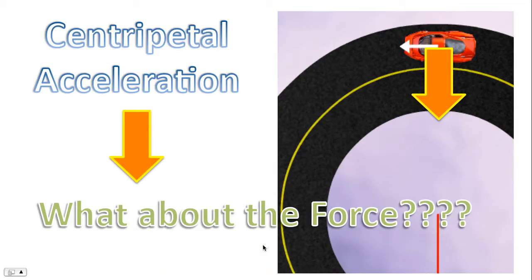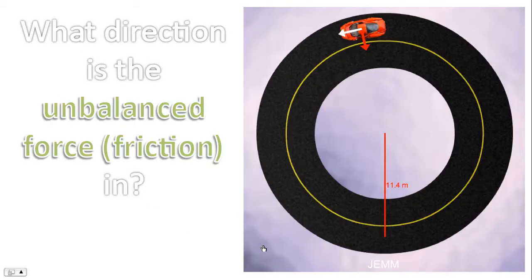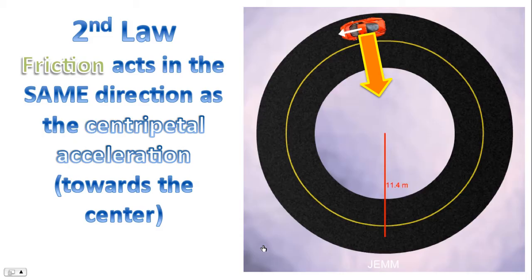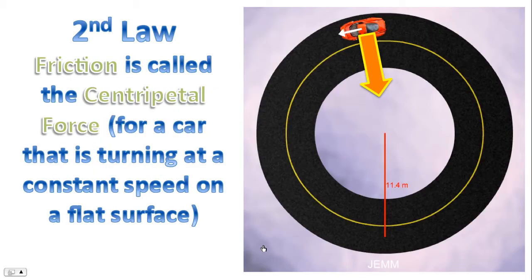So what about the force? What direction does the force acting on a car while experiencing centripetal acceleration point in? What direction is the unbalanced force — in this case, friction — in? For this, we have to look at Newton's second law, which states the acceleration of an object is proportional to the net force acting on it. The bigger the net force, the bigger the acceleration, and the acceleration is in the same direction as the net force. Friction then acts in the same direction as the centripetal acceleration — towards the center. Friction, in this case, would be called the centripetal force, specifically when a car is turning at a constant speed on a flat surface.